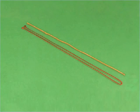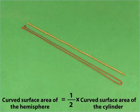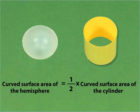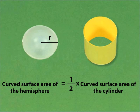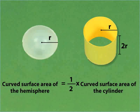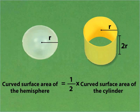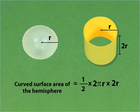Compare the length of the two threads. We can see that the length of the red thread is two times the length of the orange thread. This shows that the curved surface area of the hemisphere is half the curved surface area of the cylinder. If the radius of the hemisphere is R, then the radius and height of the cylinder are R and 2R respectively. So the curved surface area of the cylinder is 2πR × 2R.